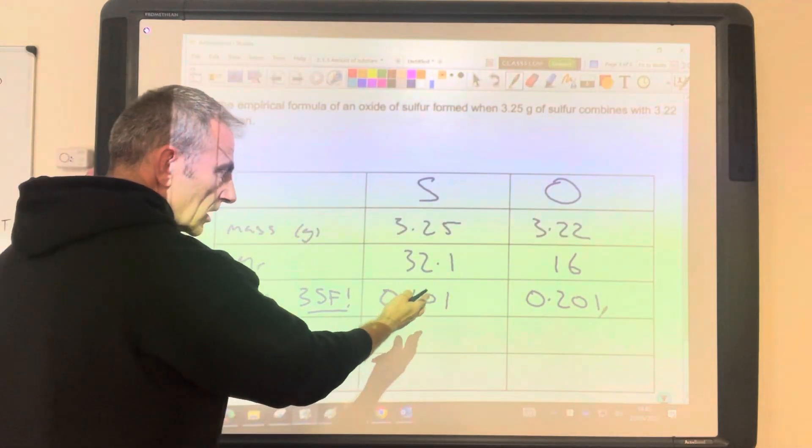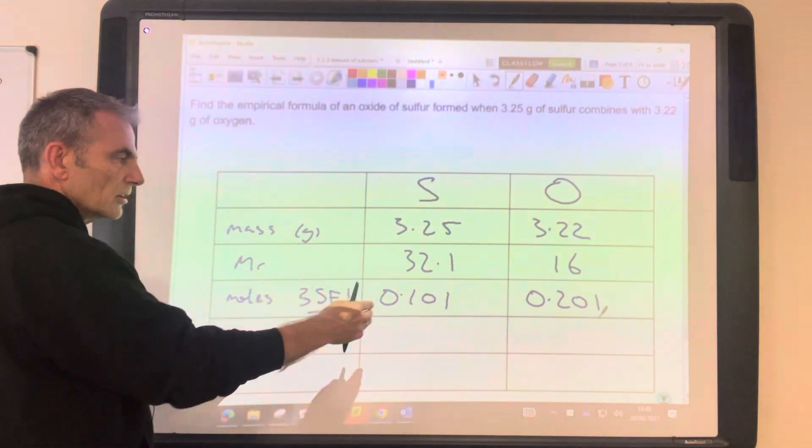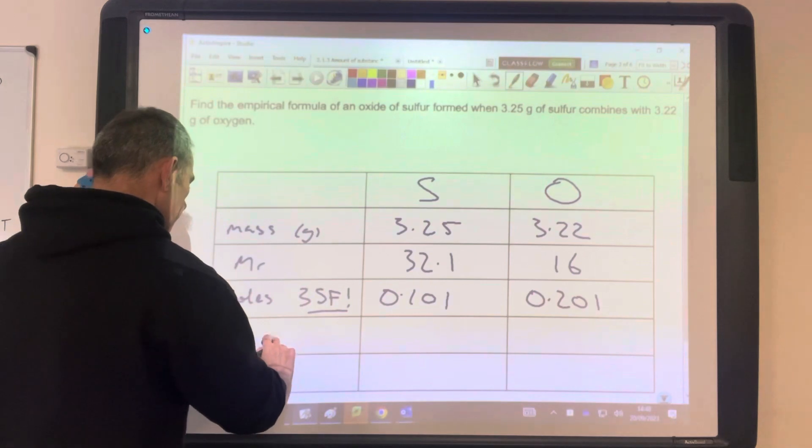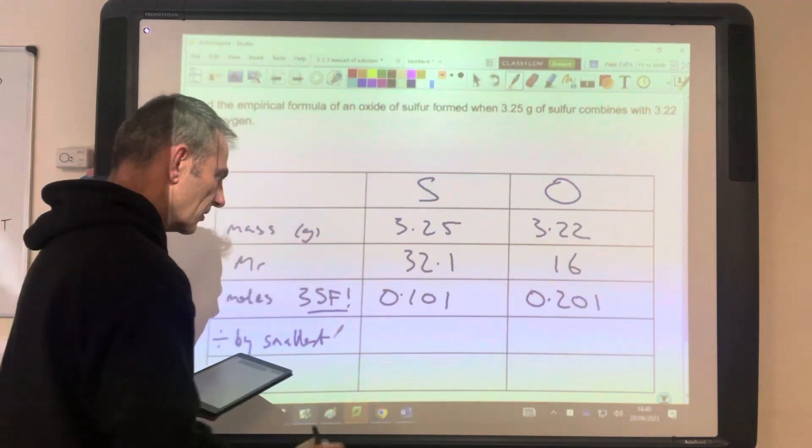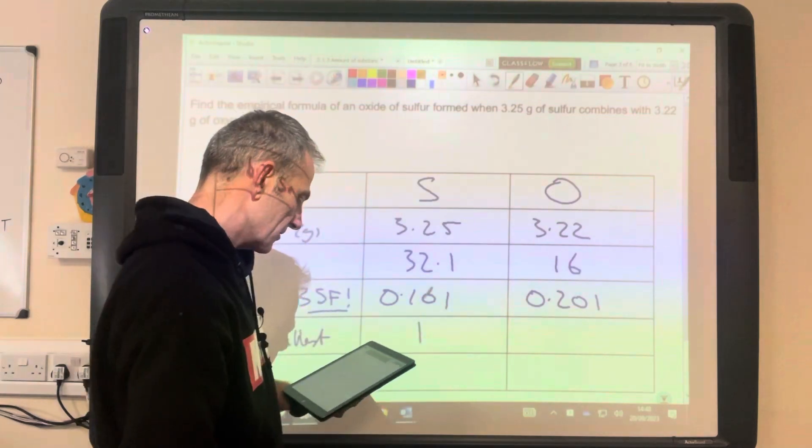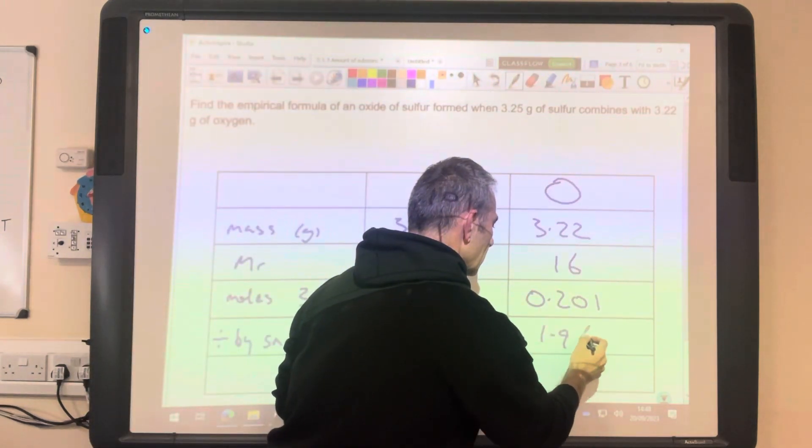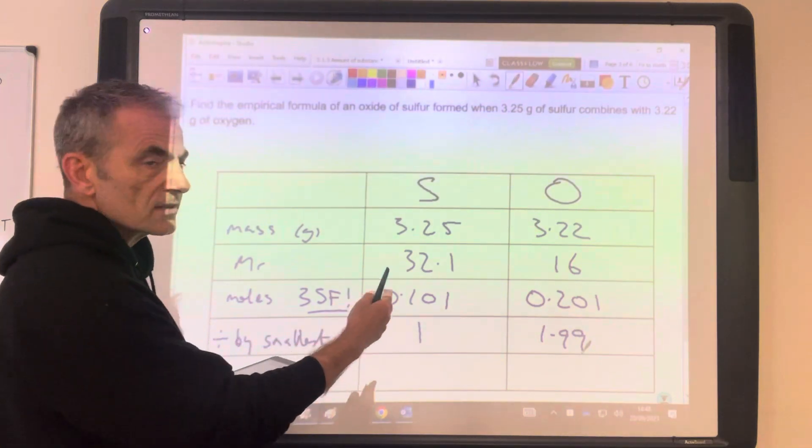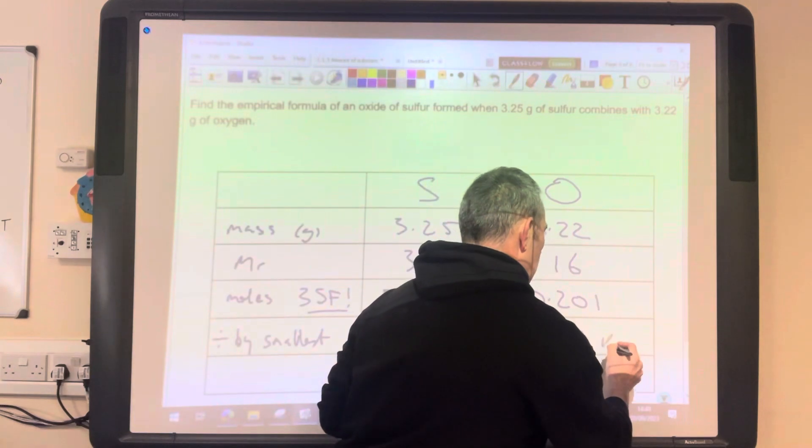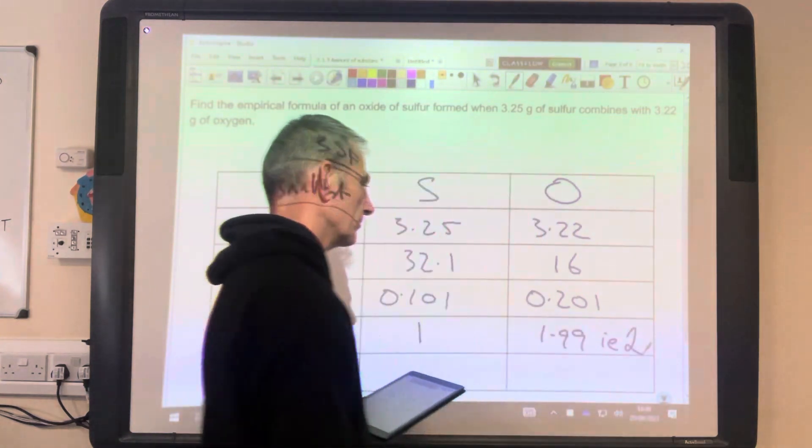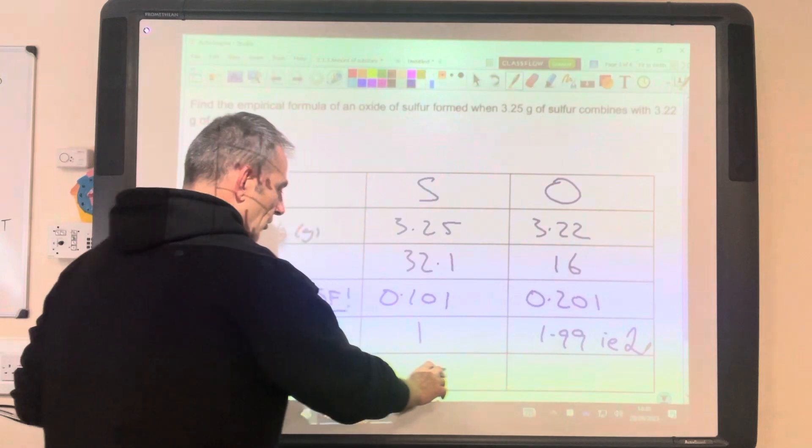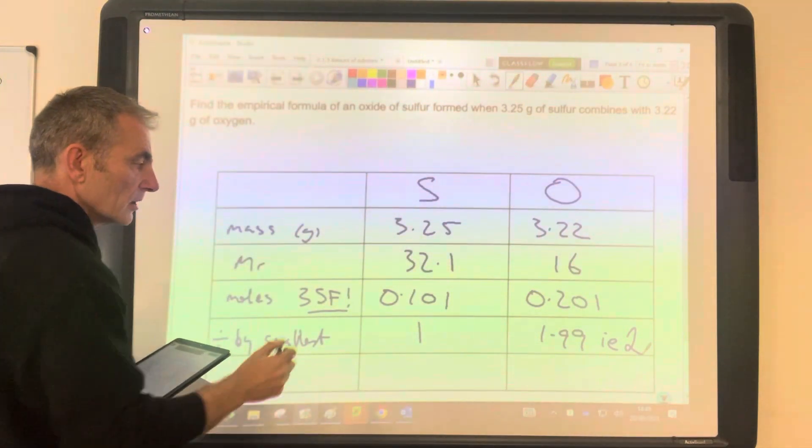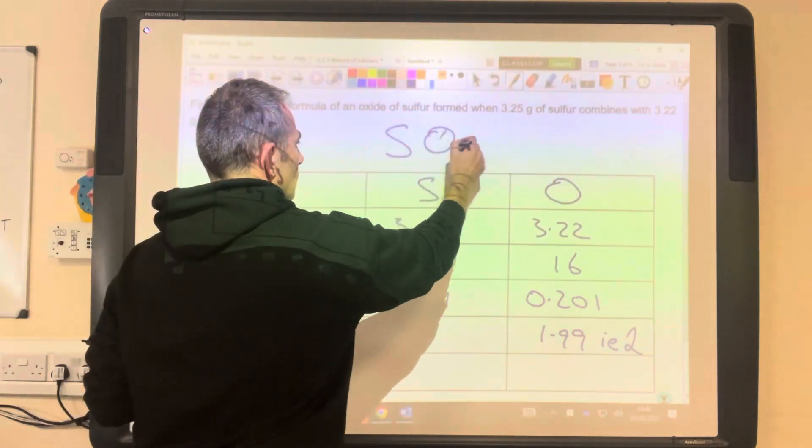And then, you can probably see the ratio there actually, but to get the ratio, the 1 to something ratio, we divide both by the smallest. So that comes out at 1, because we're dividing that by itself. This comes out at 1.99. I'm sure you can all appreciate that's so close to 2, we can safely say that that is 2. So i.e. 2 there. Now we're not going to need this row in this example, but we will need it in the next one. So we've got the empirical formula, it's SO2.